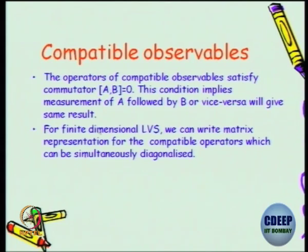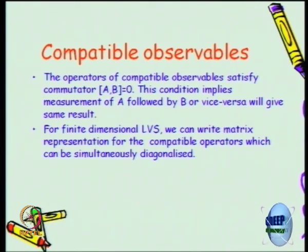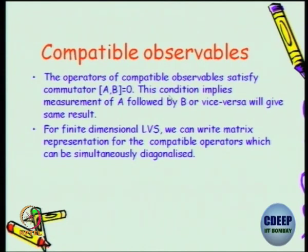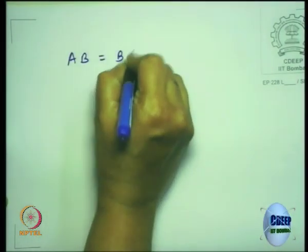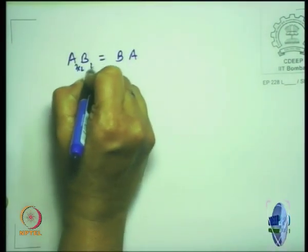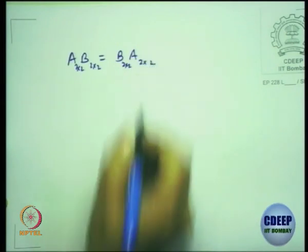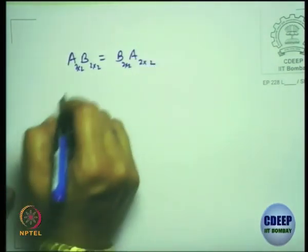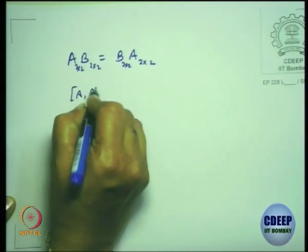For finite dimensional linear vector space, we can always write a matrix representation for these operators. And if you write a matrix representation, then the commutator of two matrices being zero means that you can simultaneously diagonalize those matrices. This is the meaning of [A, B] equal to 0.